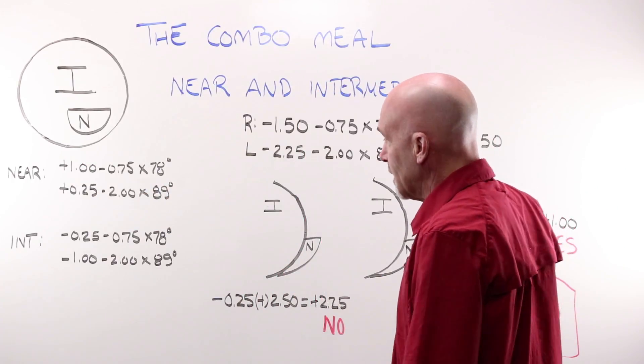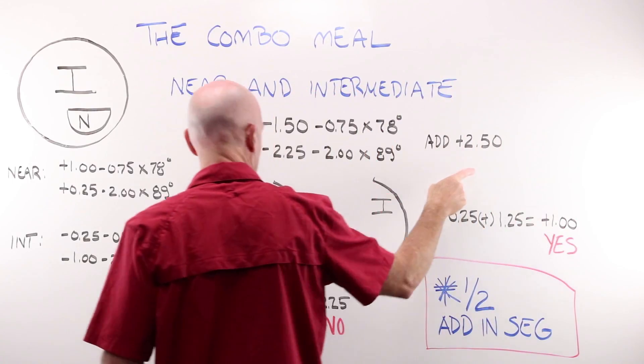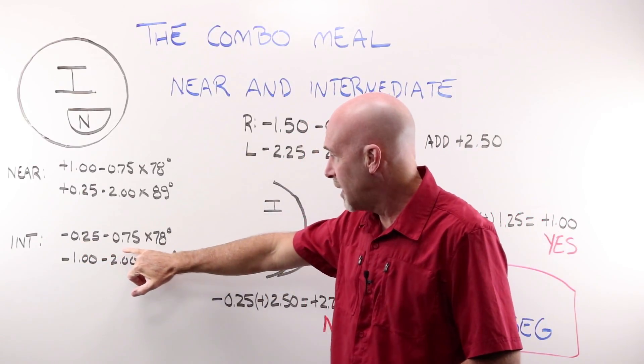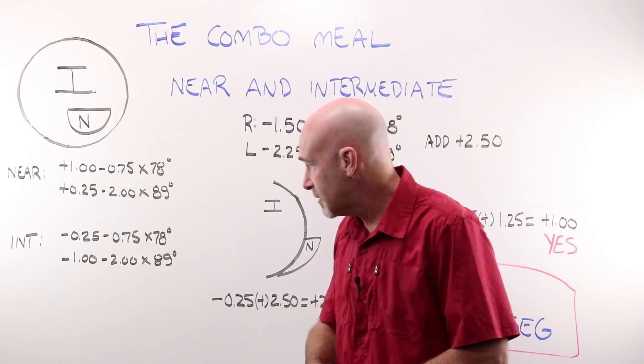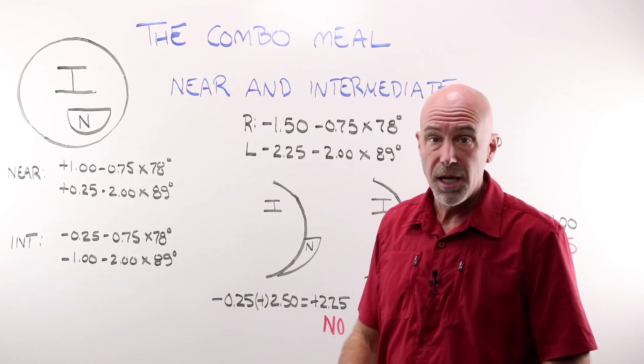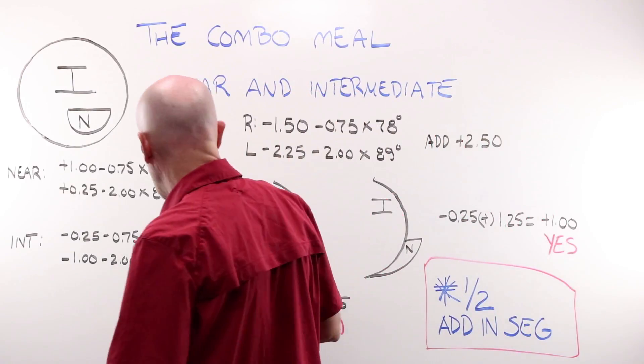I would be taking half of my add power, my 125, adding that to my sphere minus a quarter, minus 75 at 78, minus one, minus two at 89 for a single vision intermediate.